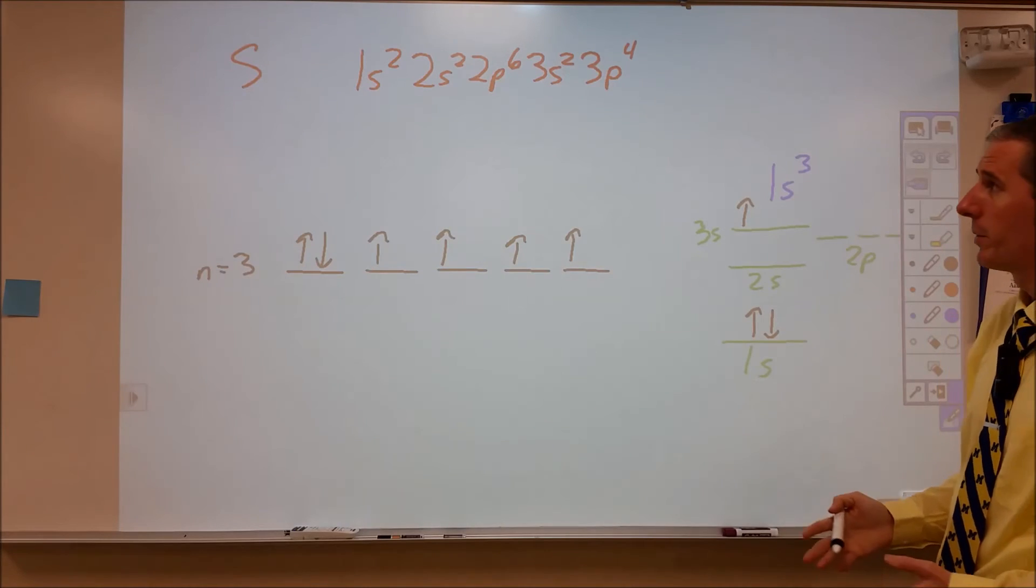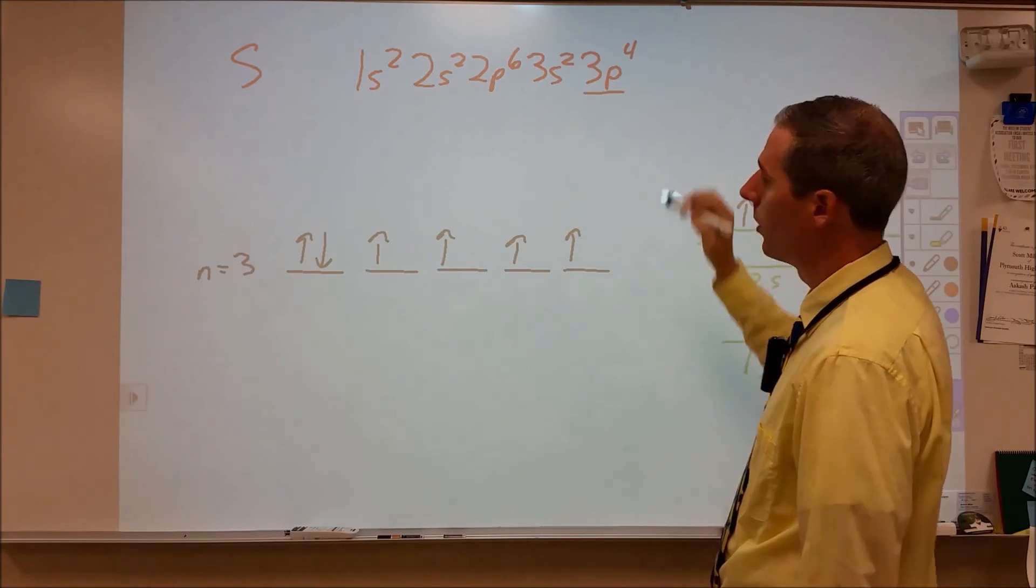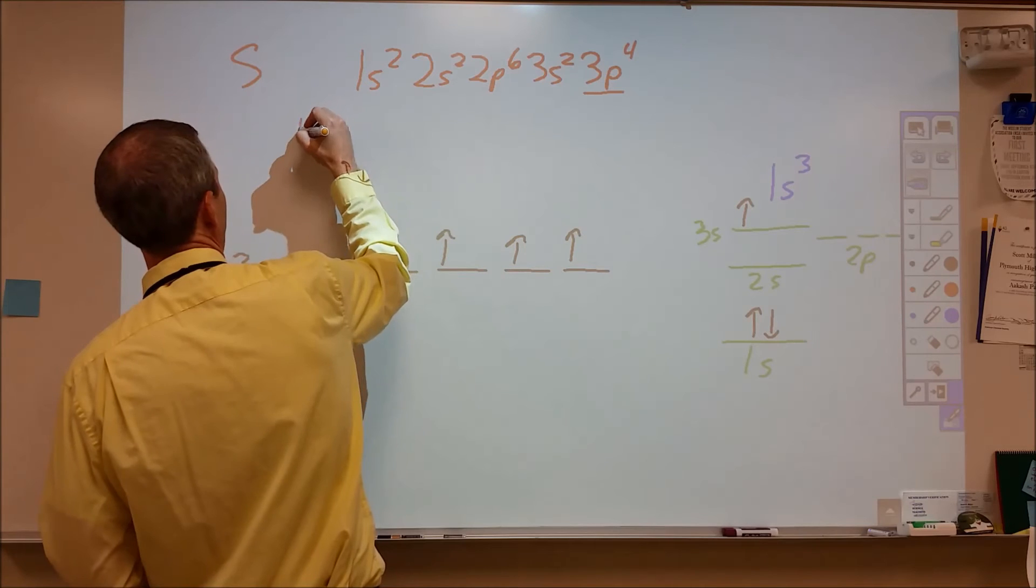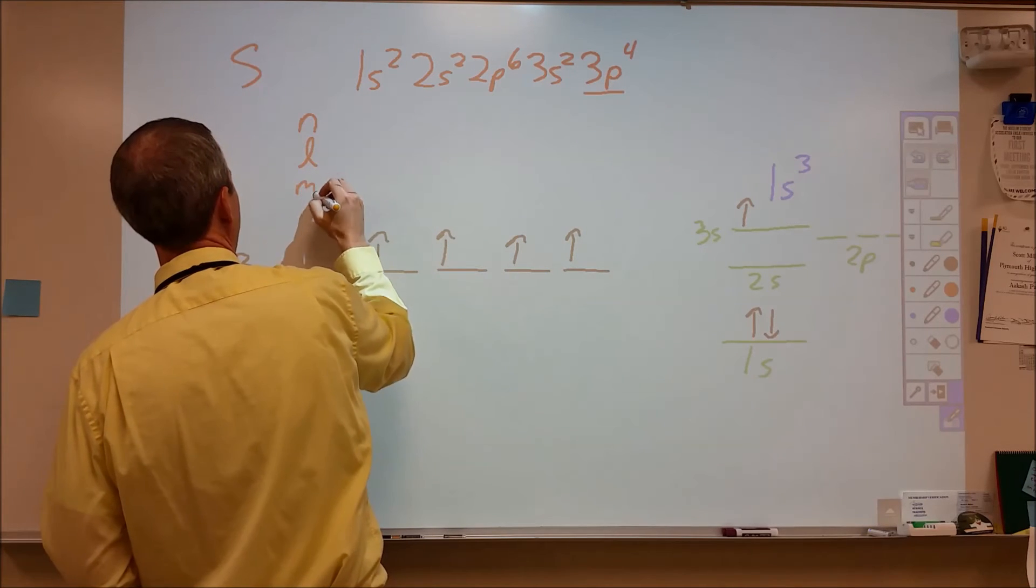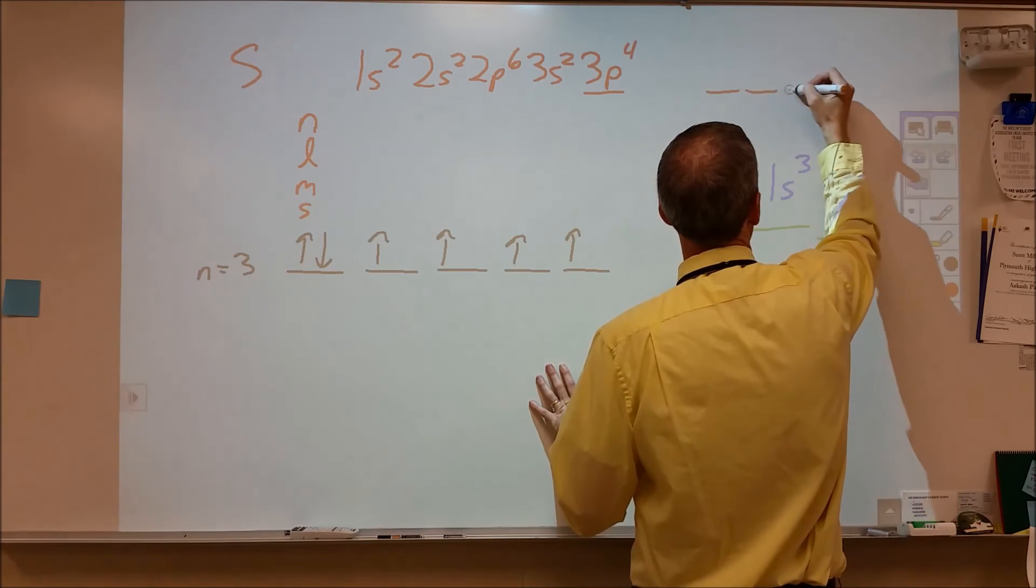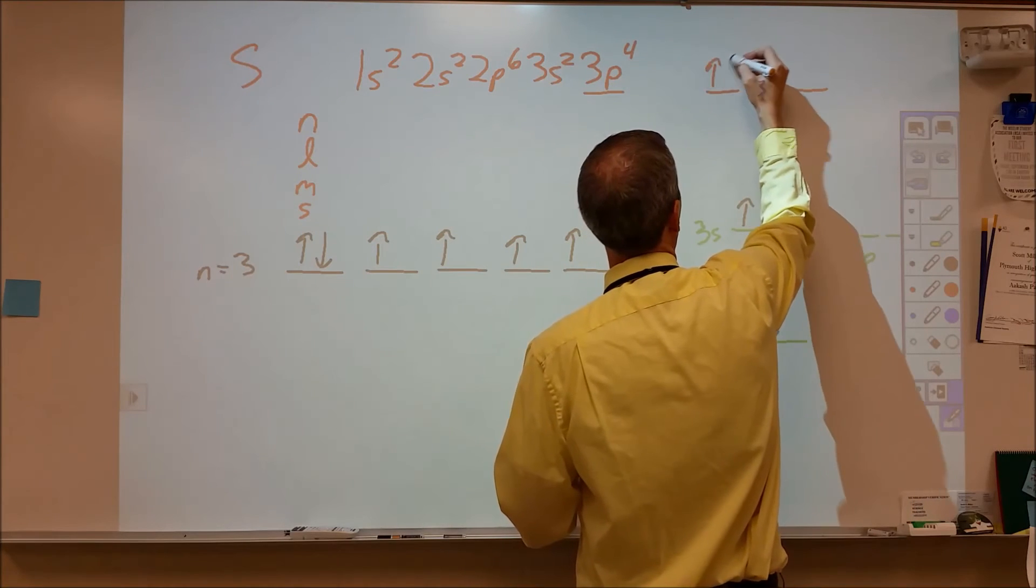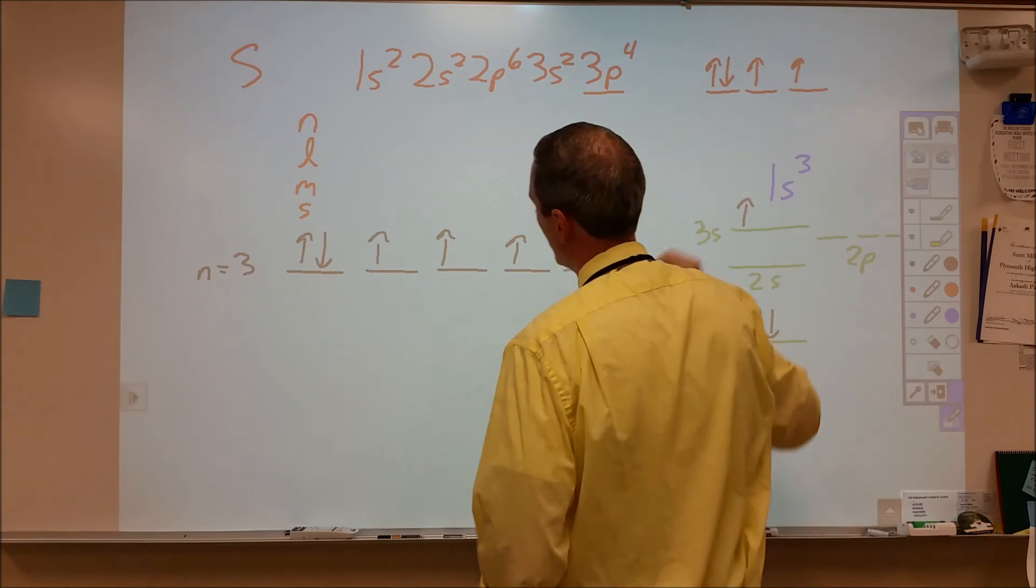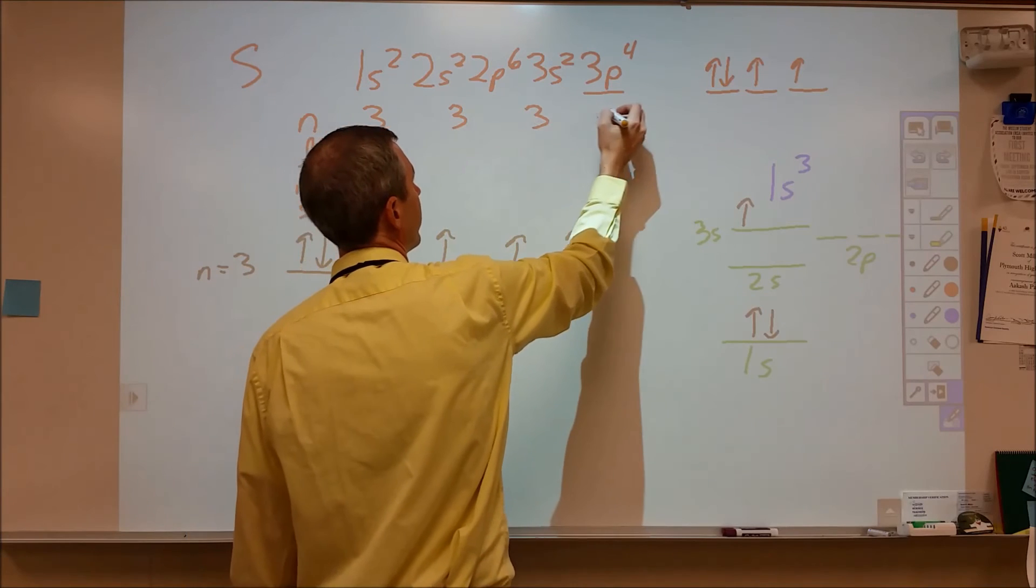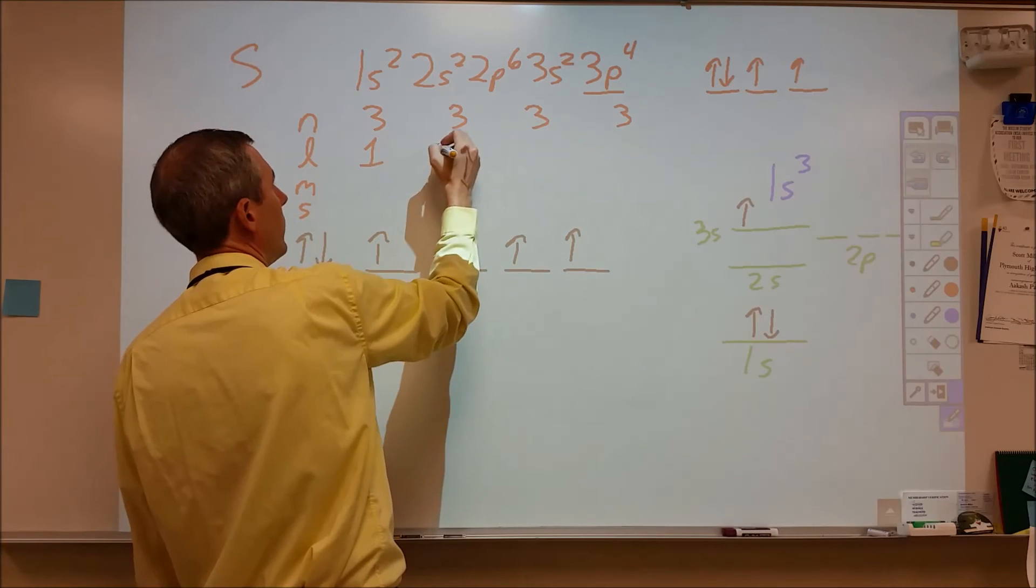So here we have some quantum number stuff that we can break down. Here I've got sulfur's electron configuration, and I want to know what are the quantum numbers for the final four electrons, the 3p4. So I'm going to have four sets of quantum numbers for n and l and m and s. A good way to do this is to draw the orbital diagram. So we have three p orbitals here in the third energy level. And we have four electrons, so we're going to fill them in like this. So our n for all of these is the same, they're all on the third energy level. l is also the same, they're all in a p orbital. So for p orbital, l would be equal to one.